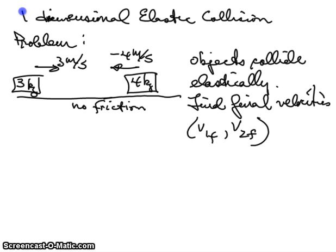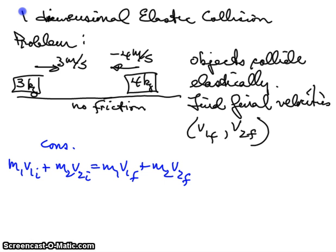This allows us to use two equations to solve for two unknowns, two final velocities. With the perfect collision, there is no energy loss, so we can use the following equations. We get M1 V1 initial plus M2 V2 initial equals M1 V1 final plus M2 V2 final. This is the conservation of momentum.